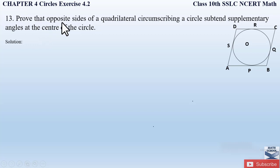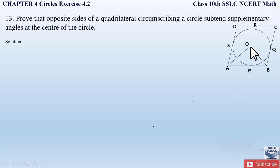So what do we have to prove? We have to prove that the opposite sides of a quadrilateral circumscribing a circle subtend supplementary angles at the center of the circle. From side AB we draw two lines joining at center O, and similarly from opposite side CD we draw another two lines. The angle AOB plus angle COD will be equal to 180 degrees. Supplementary angles means the two angles together equal 180 degrees. Similarly, for the other two sides AD and CB, angle AOD plus angle BOC equals 180 degrees.